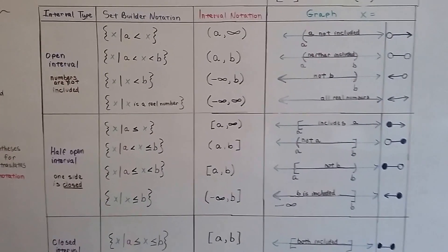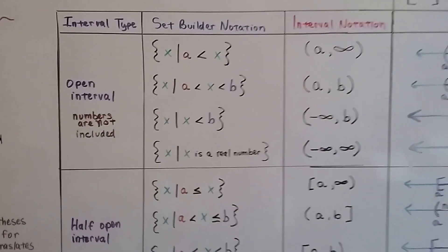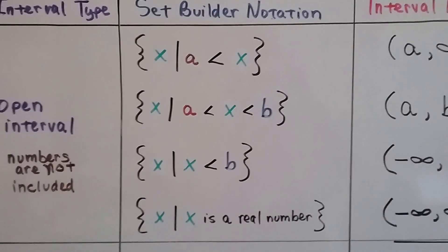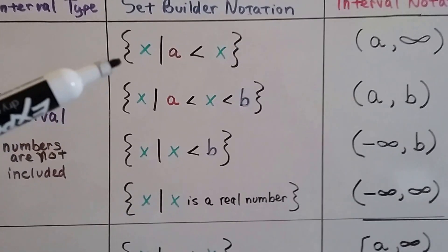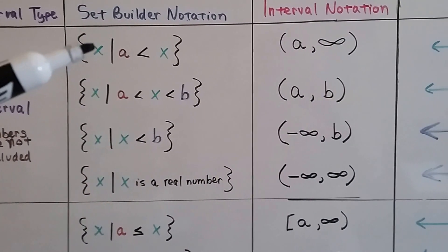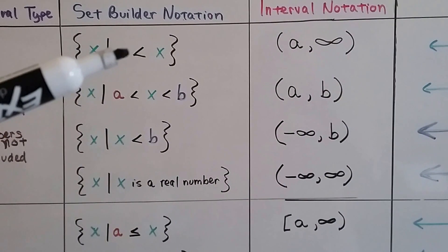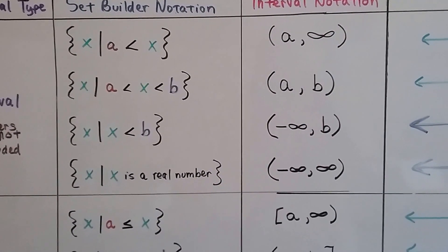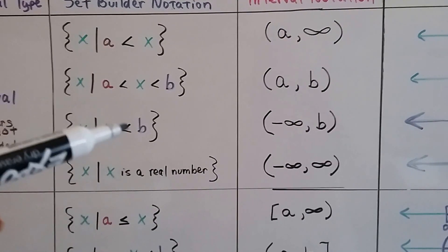So open intervals mean the numbers are not included. And in Set Builder Notation, we've got the set of all x such that a is less than x, and we use braces. See that? These all have a less than symbol.